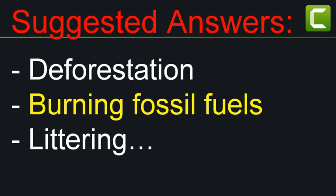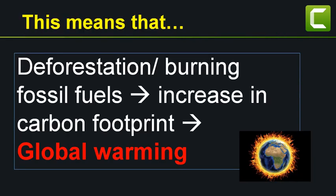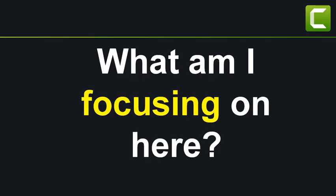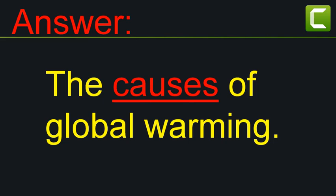Some of the suggested answers are deforestation, burning fossil fuels, and littering. This means that deforestation or burning fossil fuels leads to an increase in carbon footprint, which in turn leads to global warming. What am I focusing on here? The answer is the causes — the causes of global warming.